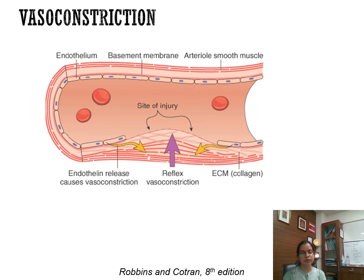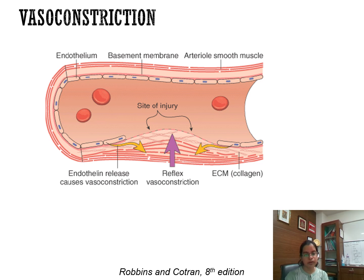The first step of hemostasis is vasoconstriction. Whenever there is an injury to the endothelial cells, the injured endothelial cells will release endothelin, which will cause vasoconstriction. At the site of injury, neural endings will be damaged and it will cause reflex vasoconstriction. This helps in minimizing blood loss at the site of injury and this is transient.